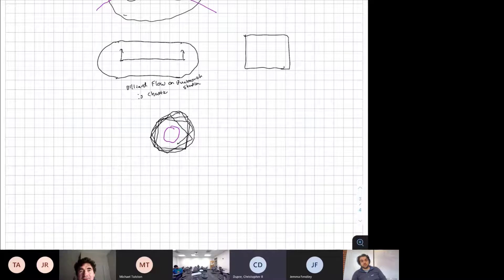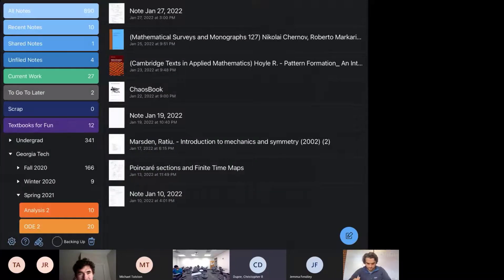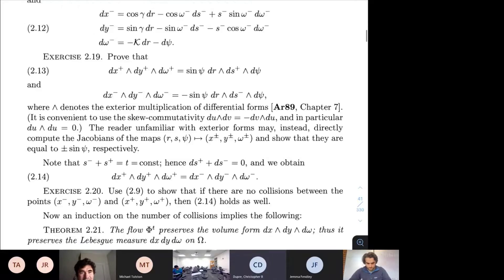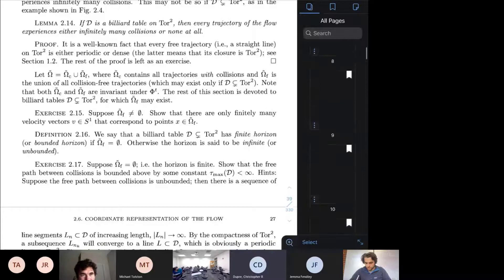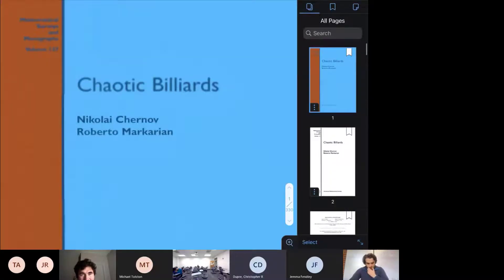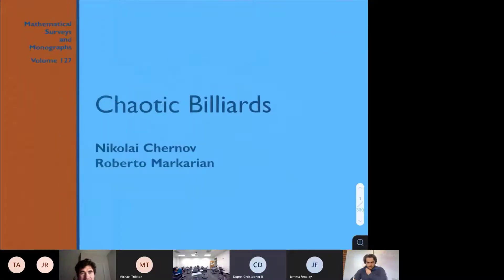I'd love to see a paper that derives the forward map. There's this book by Chernov and Markarian on chaotic billiards that was recommended by one of my advisors.